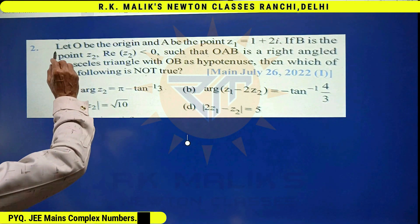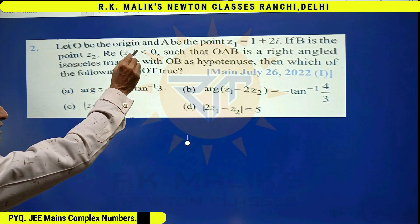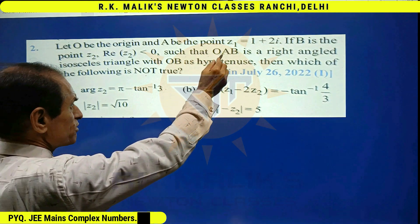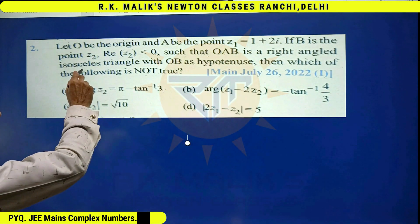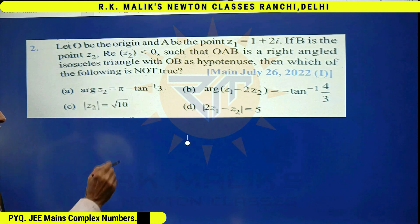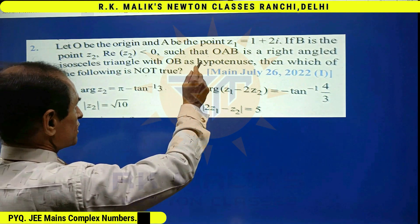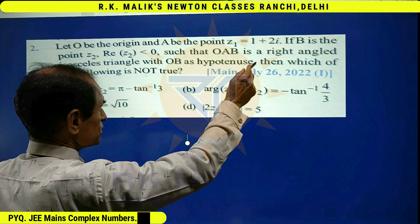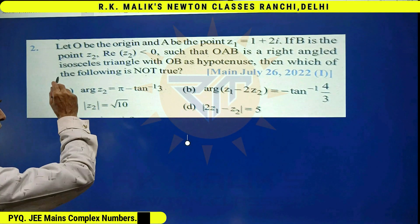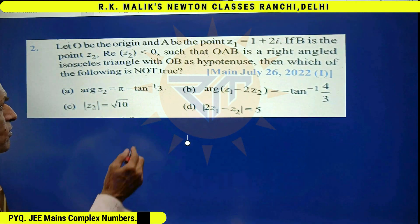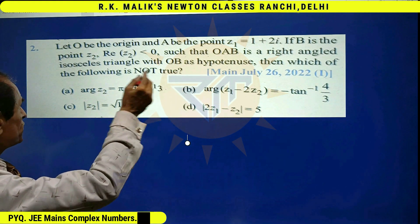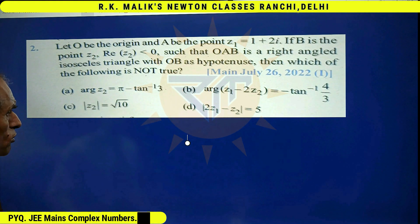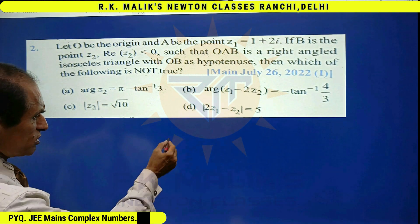In this question, it is given that let O be the origin and A be the point z1 equal to 1 plus 2i. If B is the point z2 and real part of z2 is less than 0 such that OAB is a right-angled isosceles triangle with OB as its hypotenuse, then which of the following is NOT true?